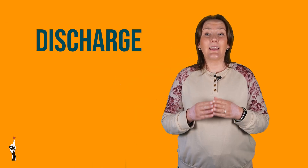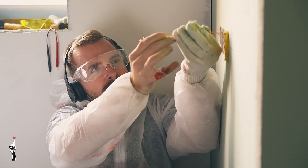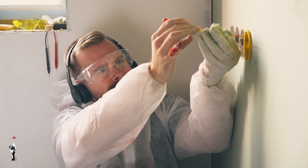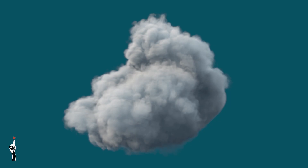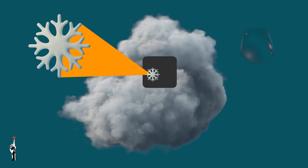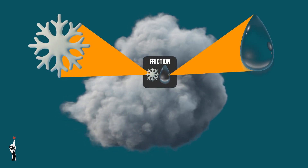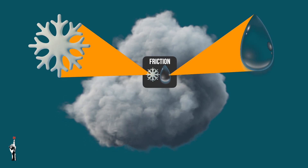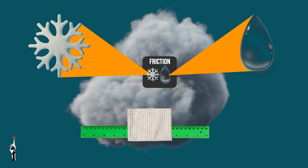Sometimes the charge gets released — this is called a discharge. It can be small or huge. A spark when you touch something is a small discharge, but a lightning bolt during a thunderstorm is a massive natural discharge of static electricity. Inside a storm cloud there's a lot of movement — tiny bits of ice and water rub against each other, creating friction just like when we rub the balloon or the ruler.